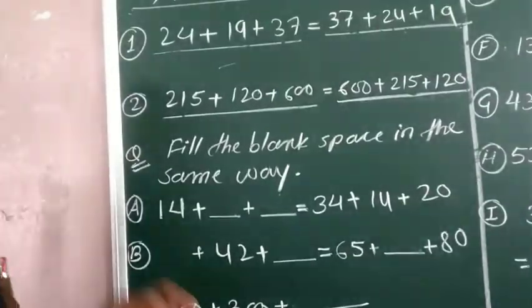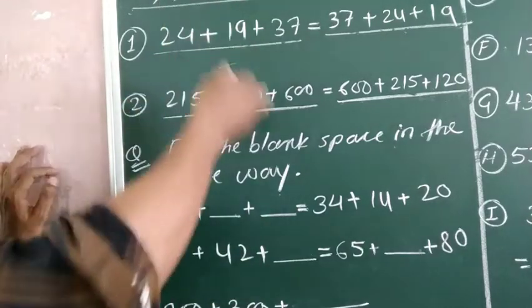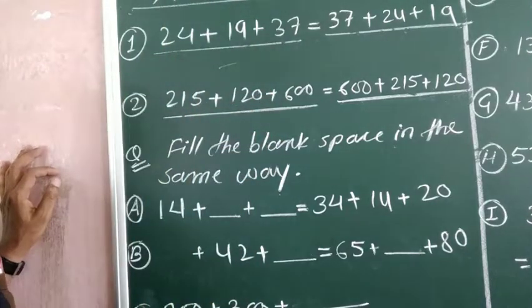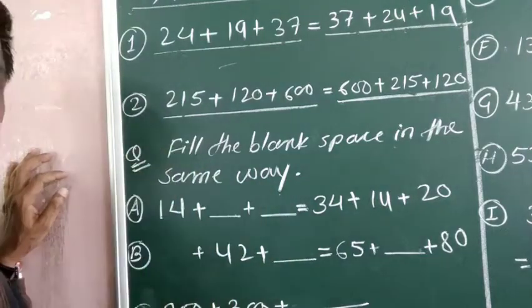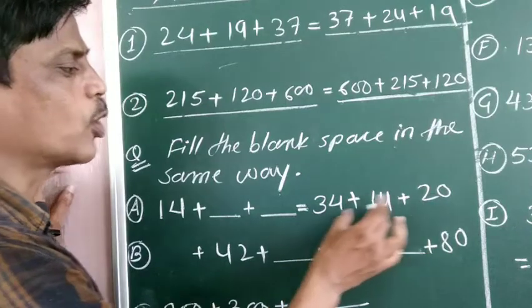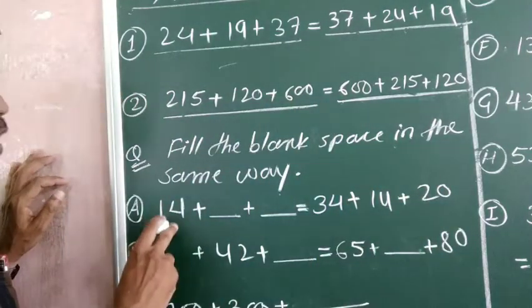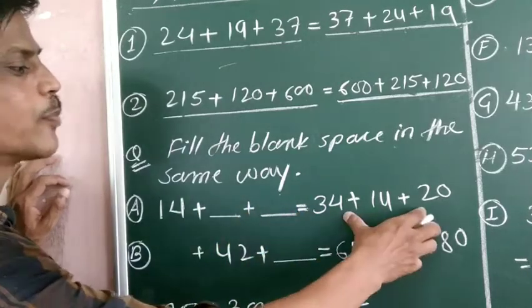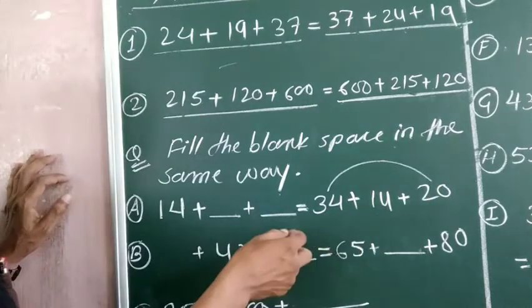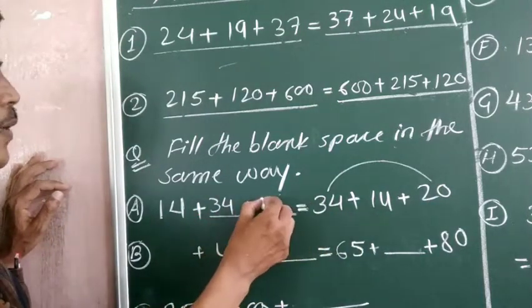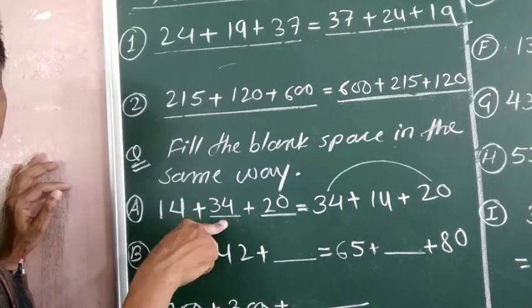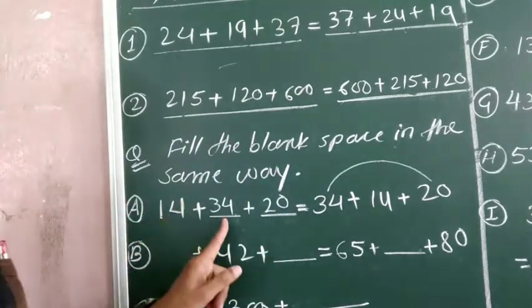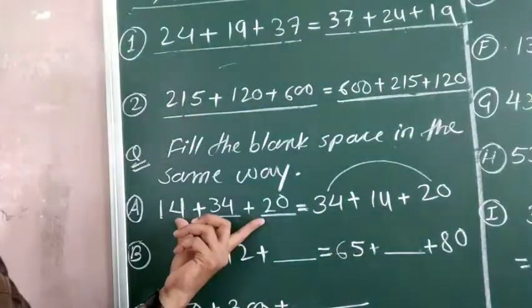Now using the same rule we have to fill in the blank spaces. Question (a): 14 plus blank plus blank equals 34 plus 14 plus 20. The three numbers are 34, 14, and 20. Here only one number is given, that is 14. The remaining two numbers we have to fill in. So we can put 34 here and 20 there: 14 plus 34 plus 20 equals 34 plus 14 plus 20.